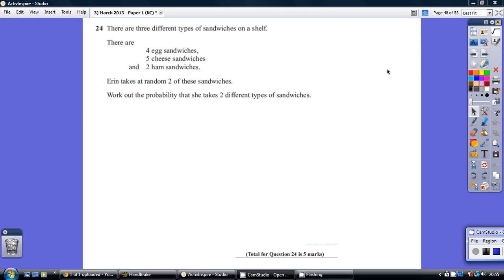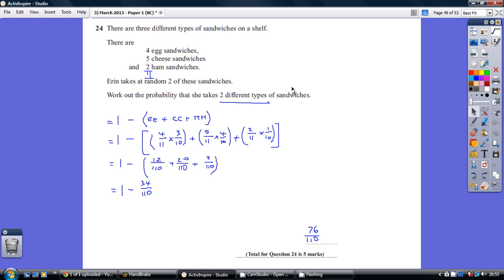This is question 24, have a go. Okay, now there are a number of ways of doing this, but I think the quickest way is to almost work out the bit that you don't need and take it away from one. We're being asked to work out the probability she takes two different types of sandwiches.